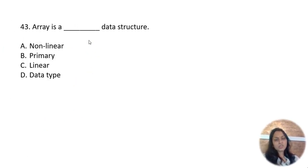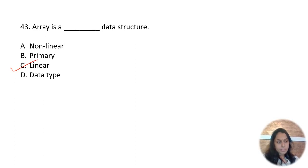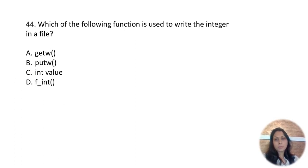Array is a what type of data structure? Array is a non-primitive and linear data structure which stores similar data types.